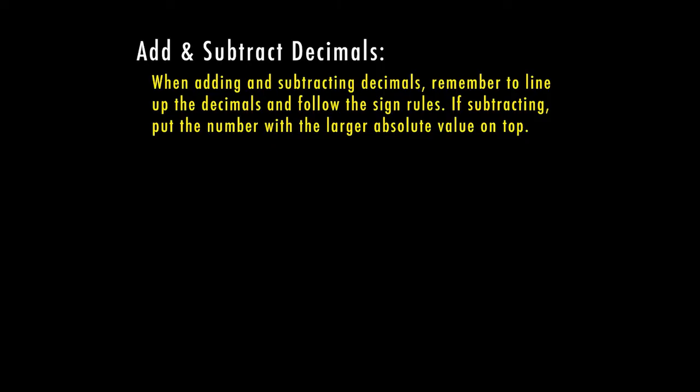When we're adding and subtracting decimals, we need to remember to line up the decimals, and then we still have to follow our sign rules. If both our decimals are positive, or both our decimals are negative, we would add those together and keep our sign. But if we're subtracting, we need to remember to put the number with the larger absolute value on top.